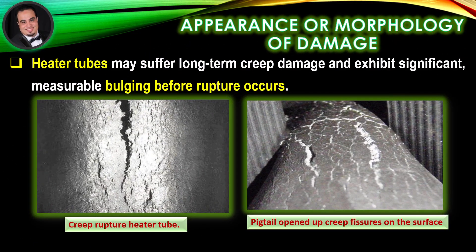At temperatures well above the threshold limit, noticeable deformation may be observed. For example, heater tubes may suffer long-term creep damage and exhibit significant measurable bulging before rupture occurs. The amount of deformation before fracture is highly dependent on the material and the combination of temperature and stress level, as illustrated in figures showing creep rupture of an HK40 heater tube and a pinched alloy 800H pigtail with opened-up creep fissures on the surface.